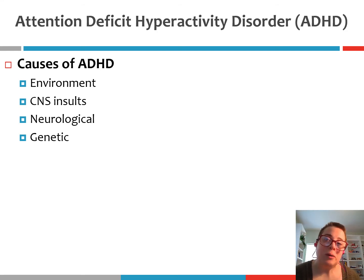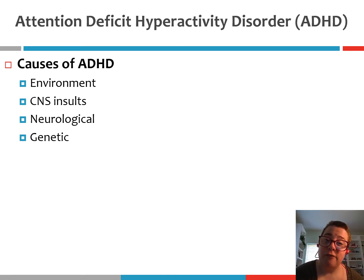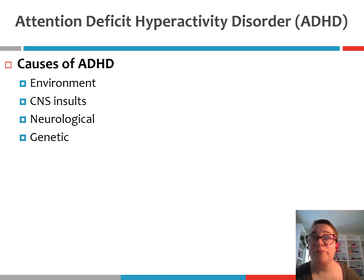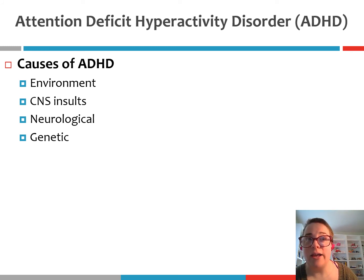There's also a considerable genetic component associated with ADHD. Seventy-five percent of cases seem to have some genetic or heritable component. If your sibling has ADHD, you are four times more likely than someone without a sibling with ADHD to develop the disorder. So 75% of ADHD cases have some kind of genetic basis.